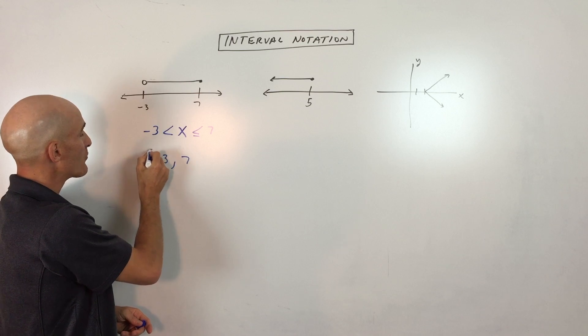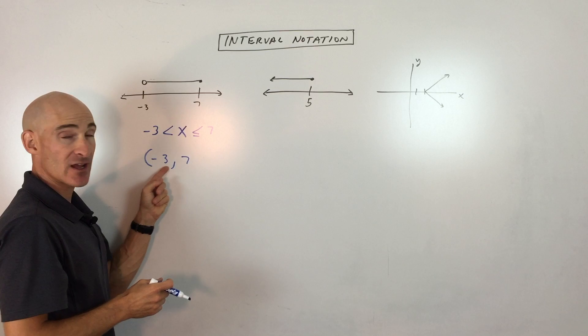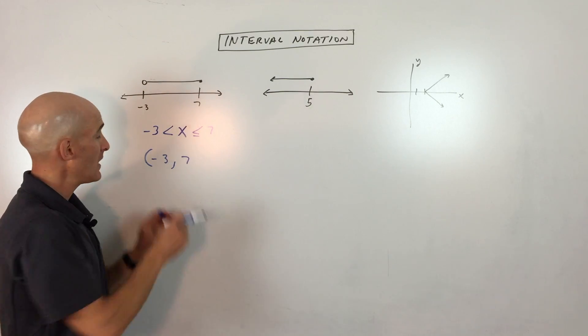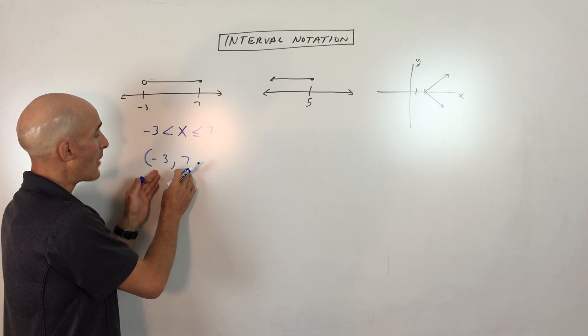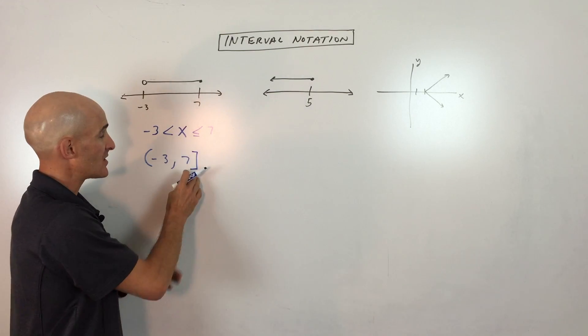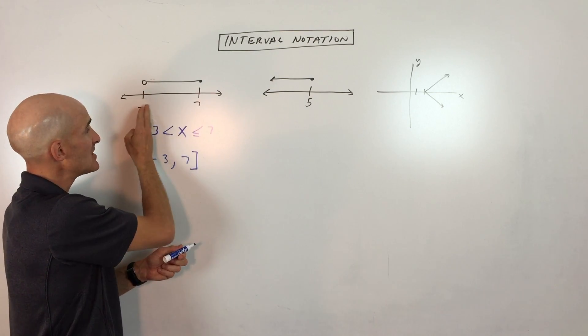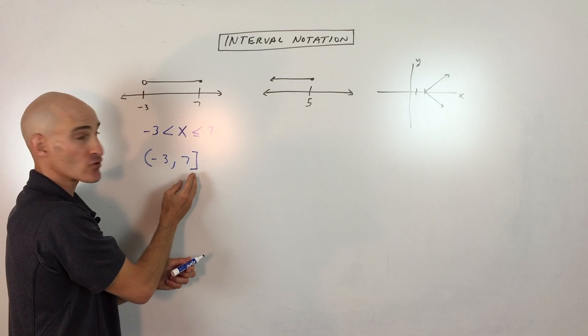Negative 3, I'm going to use a parenthesis or a curved bracket indicating that it's not including negative 3 or it's open. All the values up to 7 and including 7, we use the square bracket. So that tells us this is like a closed circle. If you can think about it on the number line, it'll be easy to think of low to high or left to right.